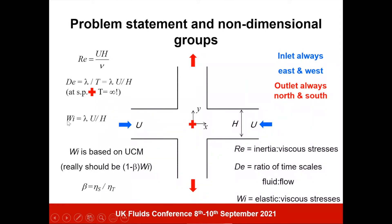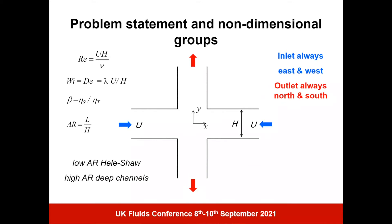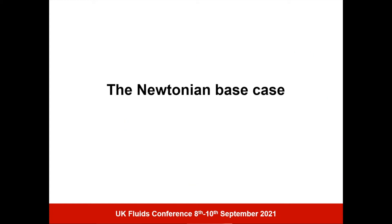People often use Deborah and Weissenberg number interchangeably, but they don't tell you exactly the same thing. In problems with only a single length scale you can't actually differentiate them. The Weissenberg or Deborah number acts as our equivalent of Reynolds number here — at zero it's just a Newtonian fluid, and as it increases it drives nonlinearity from the constitutive equation rather than the momentum equation. We also have the ratio of solvent to total viscosity; for the UCM model there is no solvent.